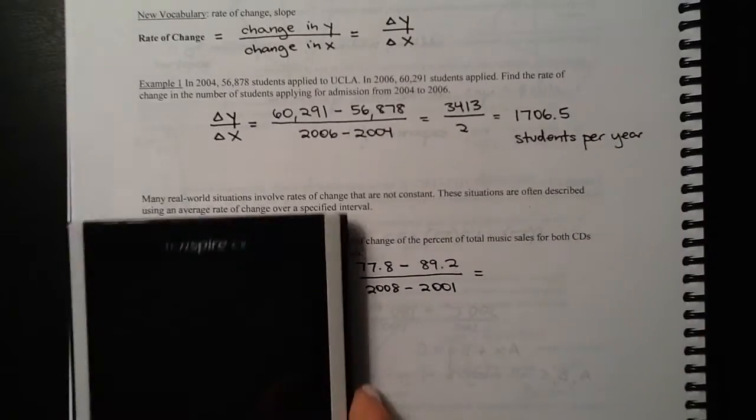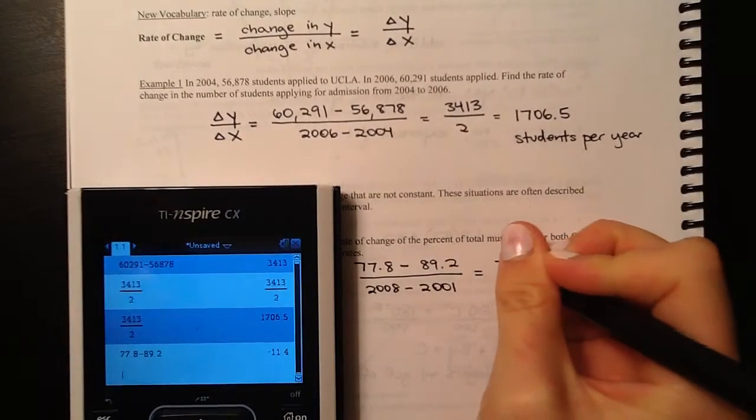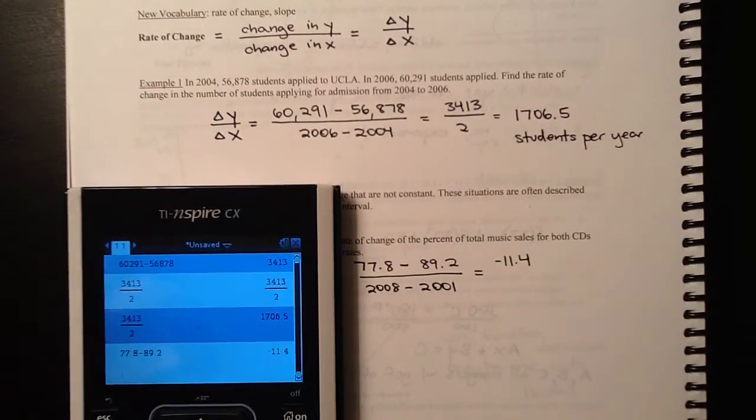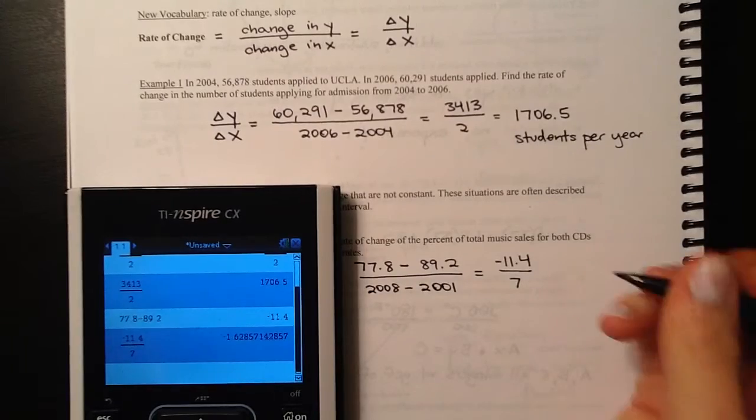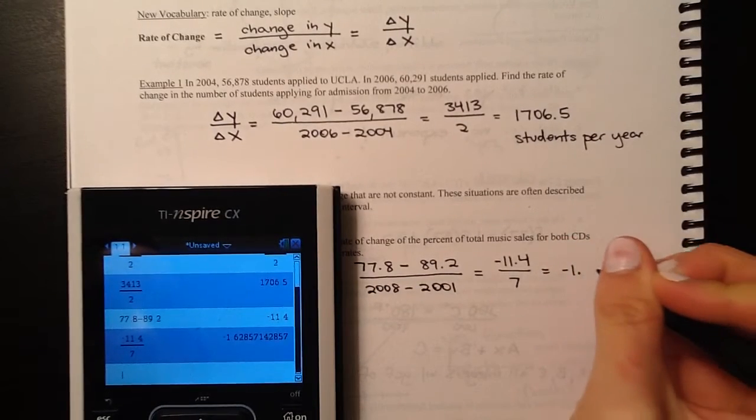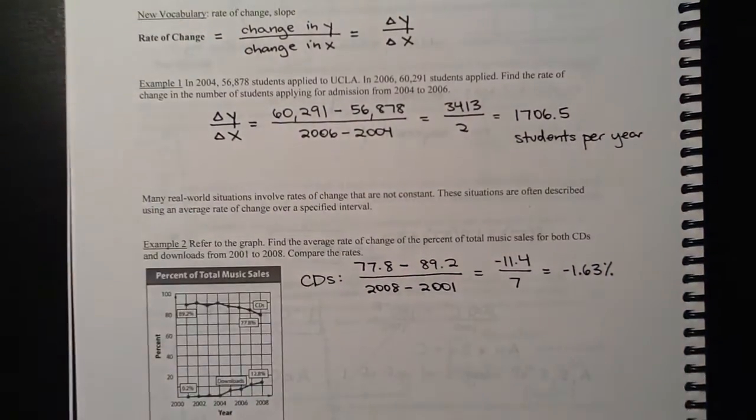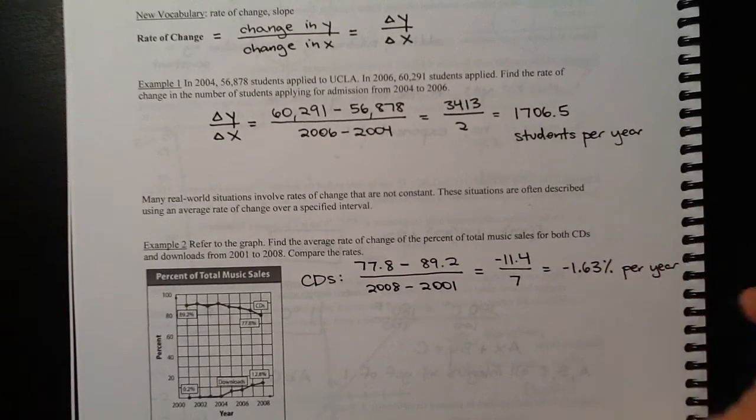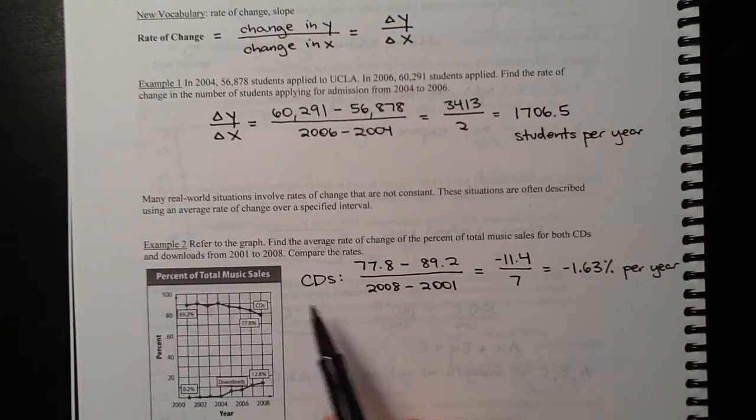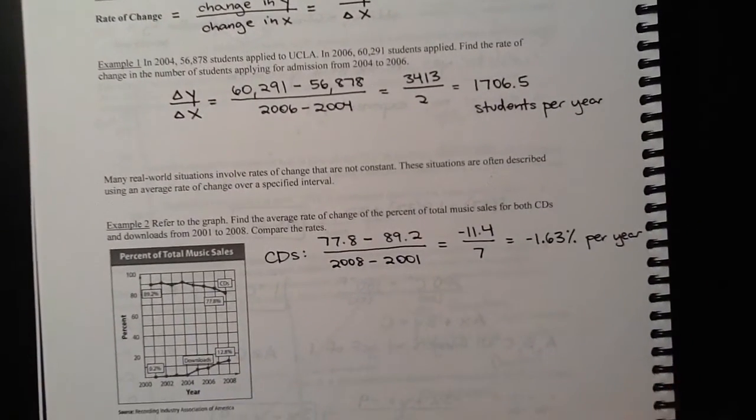So if we plug that in, the numerator, we get 77.8 minus 89.2. So that is negative 11.4. So it went down 11.4% over the course of seven years. So divide by seven years, so here's what we get. So negative 1.63% per year. So what this means is that CD sales were decreasing at about negative 1.63% per year.